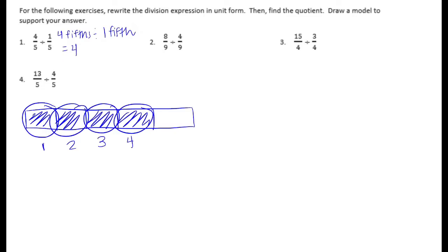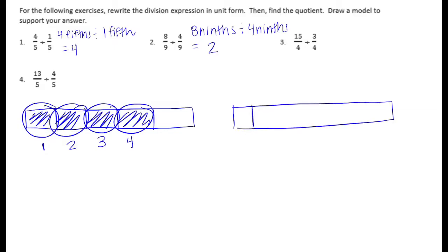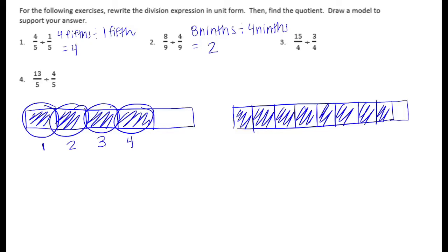Number 2: 8 ninths divided by 4 ninths. In unit form, it would be 8 ninths divided by 4 ninths. Since 8 divided by 4 is 2, we should get 2 with our model. I'm going to separate this into ninths and shade in 8 ninths, then separate into groups of 4 ninths. There's 1 group of 4 ninths and 2 groups of 4 ninths with no leftovers. So it's just 2.